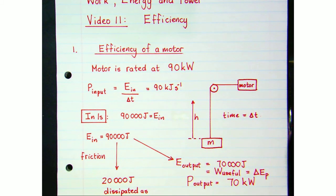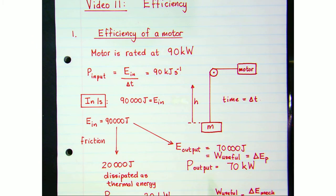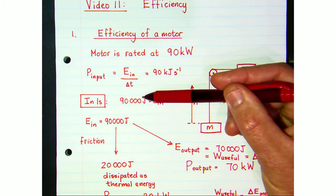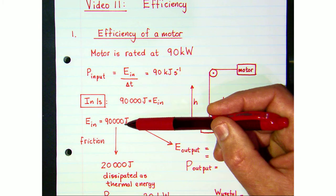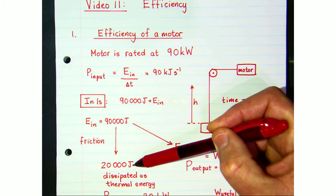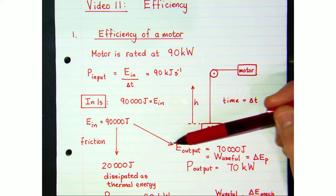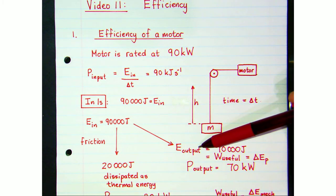Let's suppose we lose 20,000 joules of energy while it's doing work in one second, and that energy would be dissipated as thermal energy — a lot of heat energy dissipated through friction. So not all of the 90,000 joules is going to useful work done; some of it is dissipated as thermal energy.